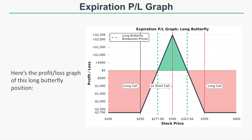Deconstructing the butterfly: it's a combination of a long 250/300 call spread and a short 300/350 call spread. If the stock price is at $322.94, the long 250/300 call spread is worth its maximum value of $50, and the short 300/350 call spread is worth $22.94. To get the butterfly's value, take the long spread value minus the short spread value: $50 minus $22.94 equals $27.06 — exactly what we paid — so we break even.